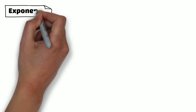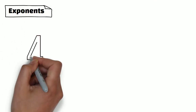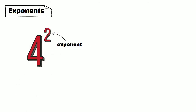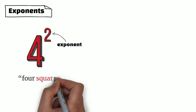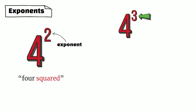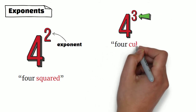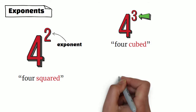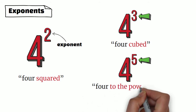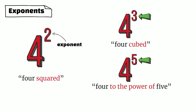Let's now move on to the last subsection: exponents. The small value is called the exponent. We read '4²' as '4 squared.' If the exponent value is 3, we say '4 cubed.' If the exponent value is greater than 3, we read '4⁵' as '4 to the power of 5,' or we can say '4 to the fifth power.'